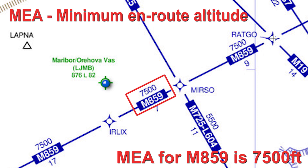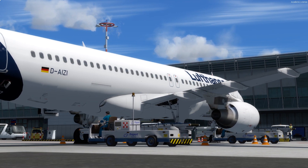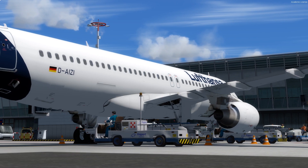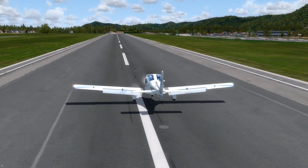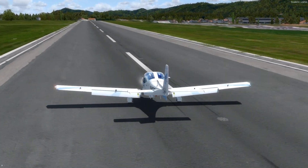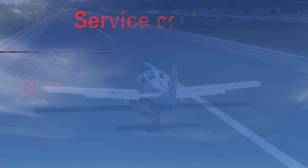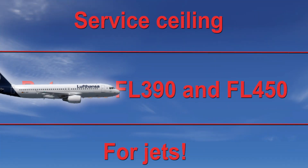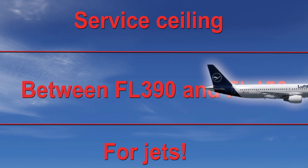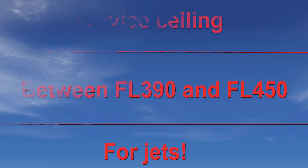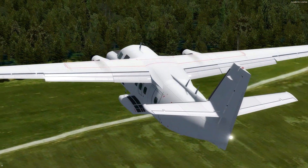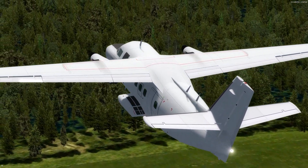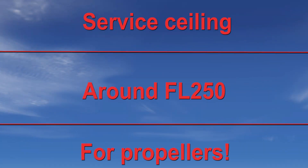Now let's look at upper flight limits. Here the restrictions are not due to terrain but to the capabilities of the aircraft. The maximum flight altitude is determined by the manufacturer. Jet-driven commercial or business aircraft typically have a ceiling somewhere between flight level 390 and flight level 450. Propeller-driven aircraft do not share the same ceiling — due to air density, they generally fly at lower altitudes, around flight level 250.